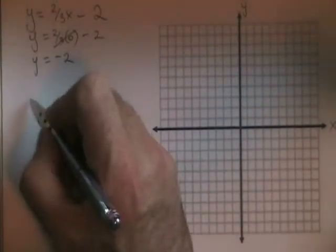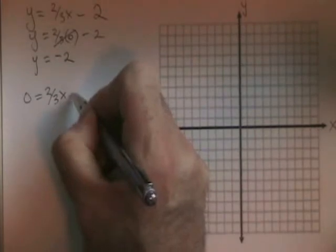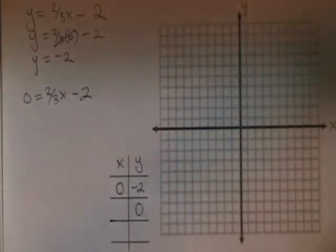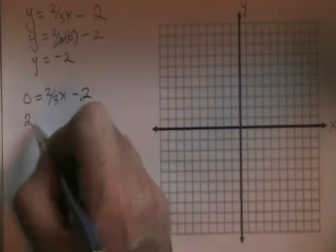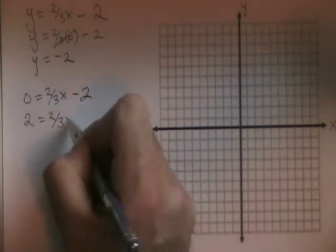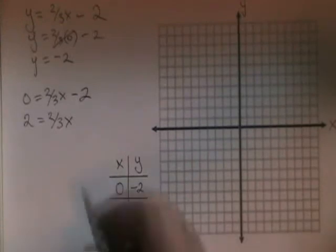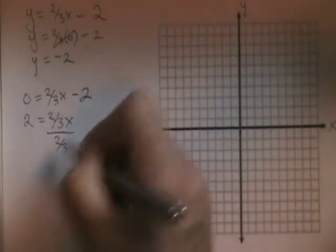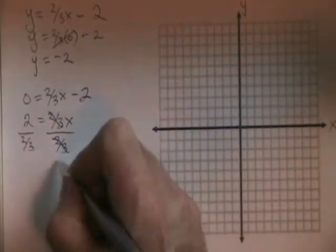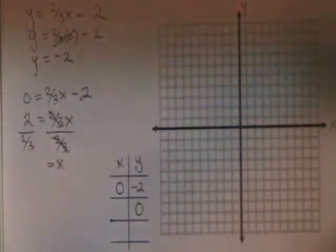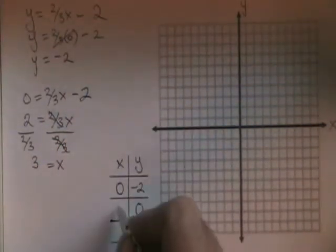If y equals zero, the equation becomes zero equals two-thirds x minus two. If I move the negative two to the left of the equal sign, I have two equals two-thirds x. If I divide both sides by two-thirds, these cancel. My x is isolated, and two divided by two-thirds is equal to three. So I put the three in the table here.